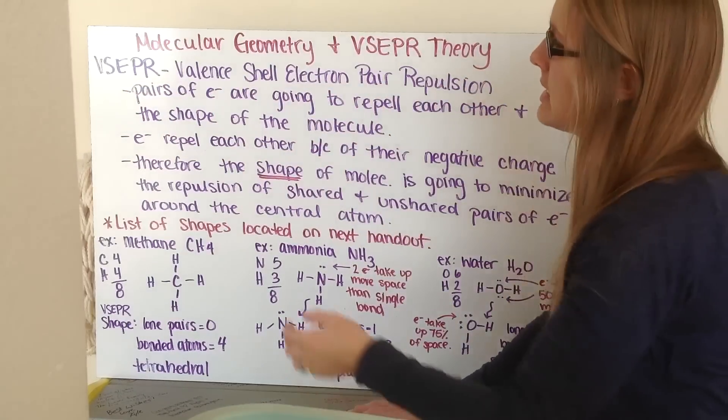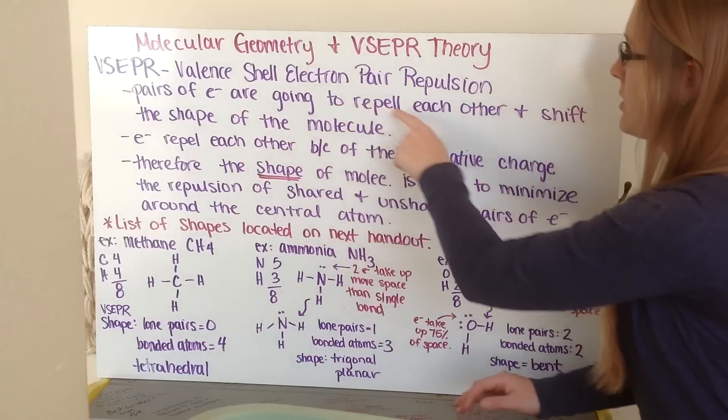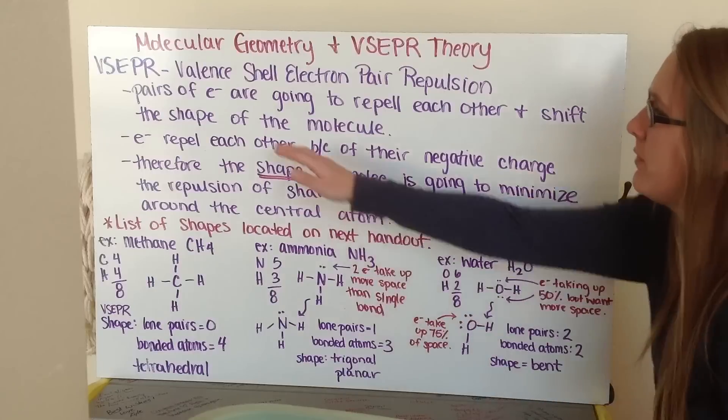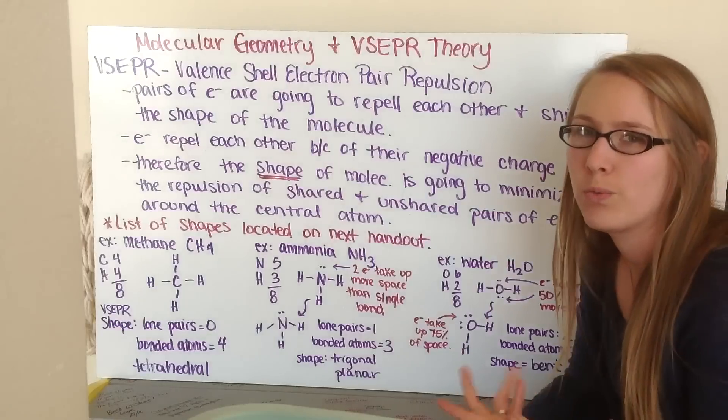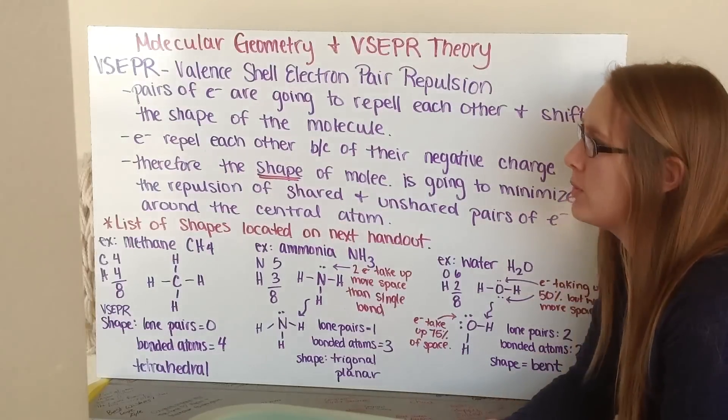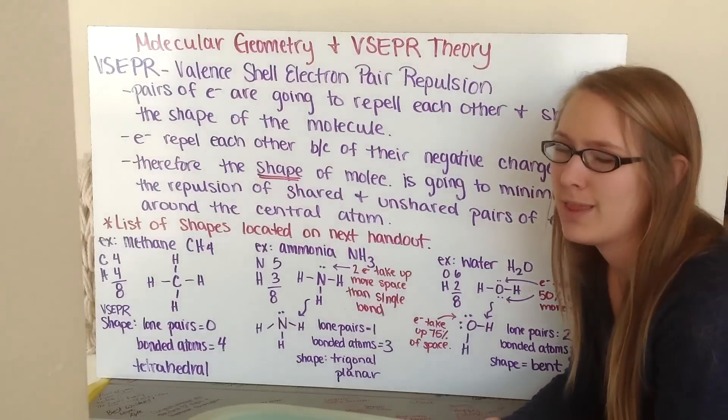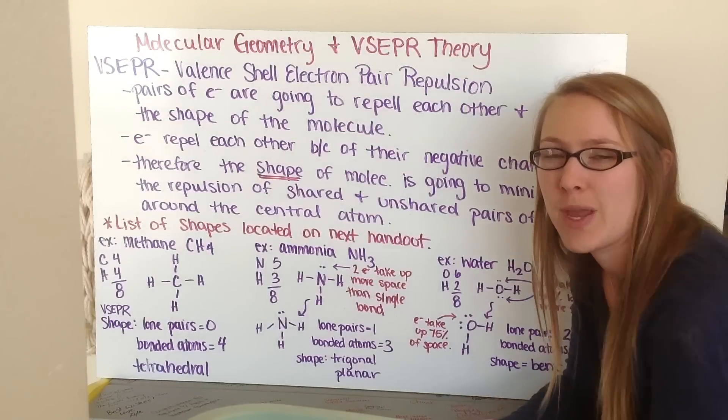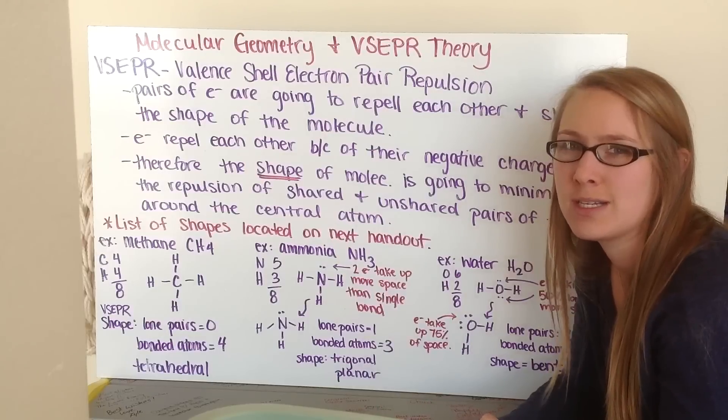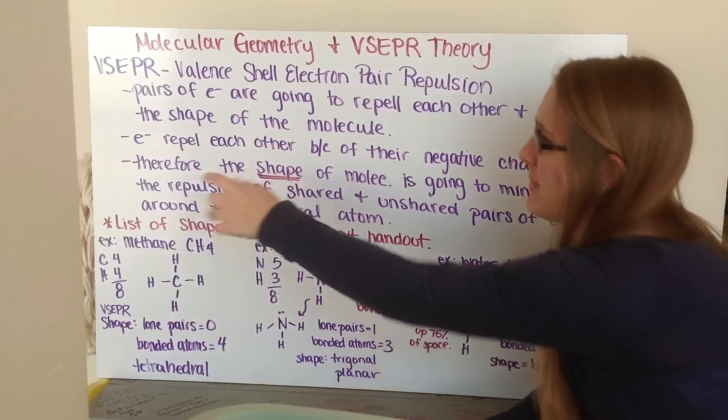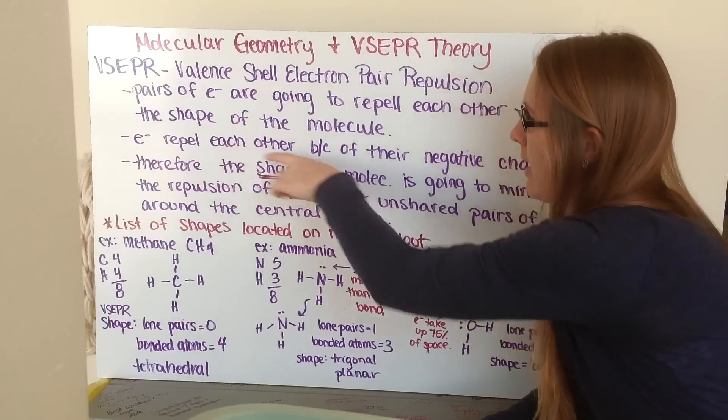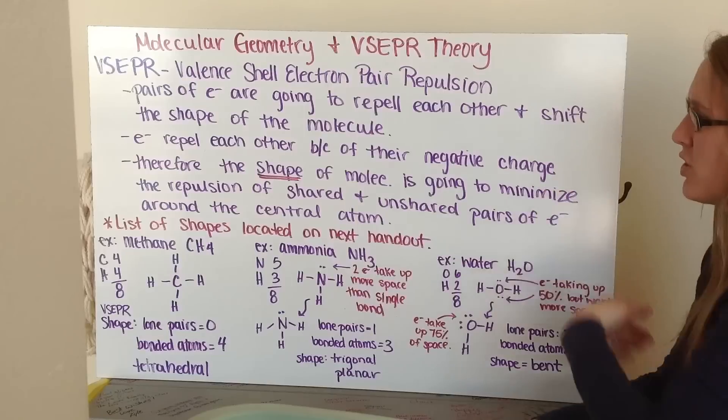What this means is that pairs of electrons are going to repel each other and shift the shape of the molecule. We've been drawing Lewis structures and disregarding the fact that lone pair electrons really do take up more space than electrons in a single, double, or triple bond. This happens because electrons repel each other because of their negative charge.